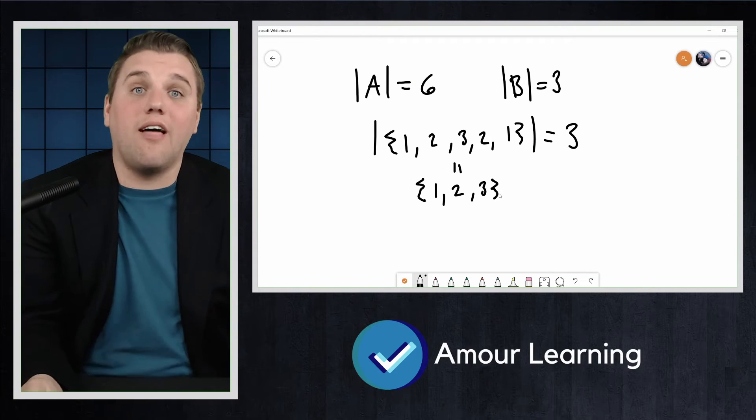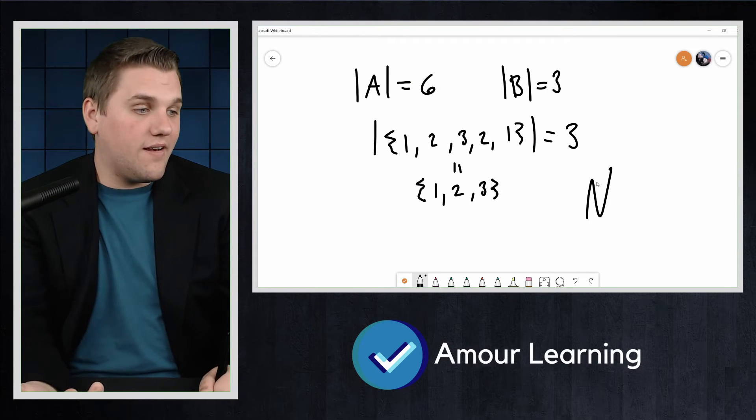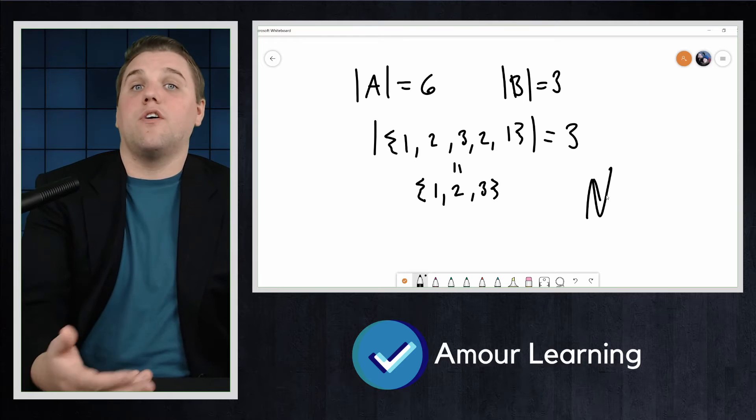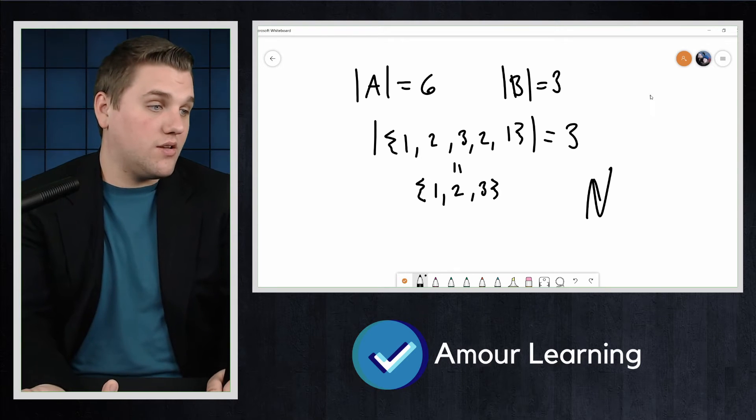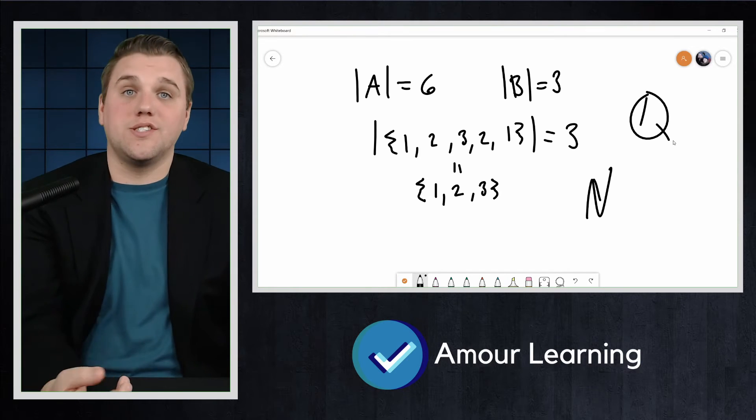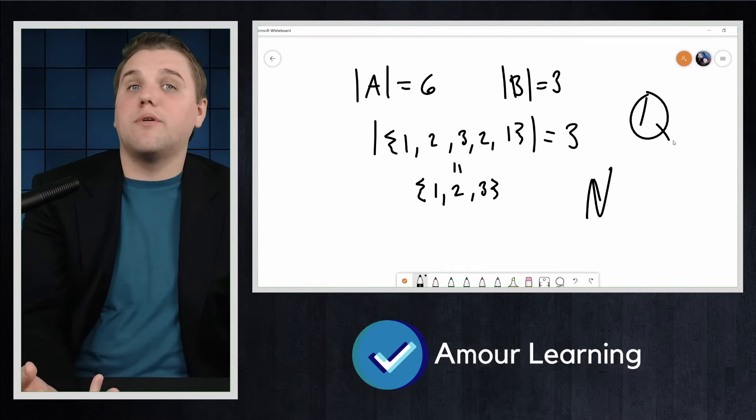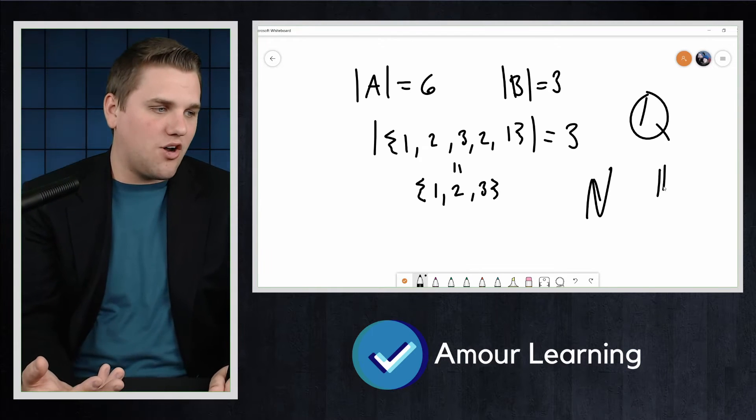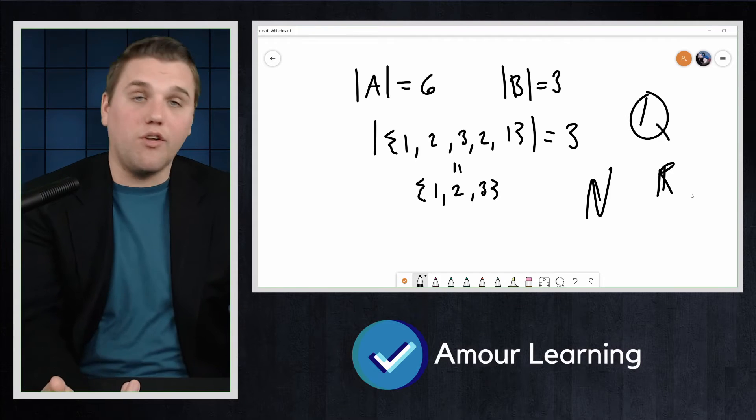There are sets with infinite cardinality, such as N, the natural numbers. The set of rational numbers is another one, Q, which is the set of fractions. The set of even natural numbers and the set of real numbers, which we'll denote as R.